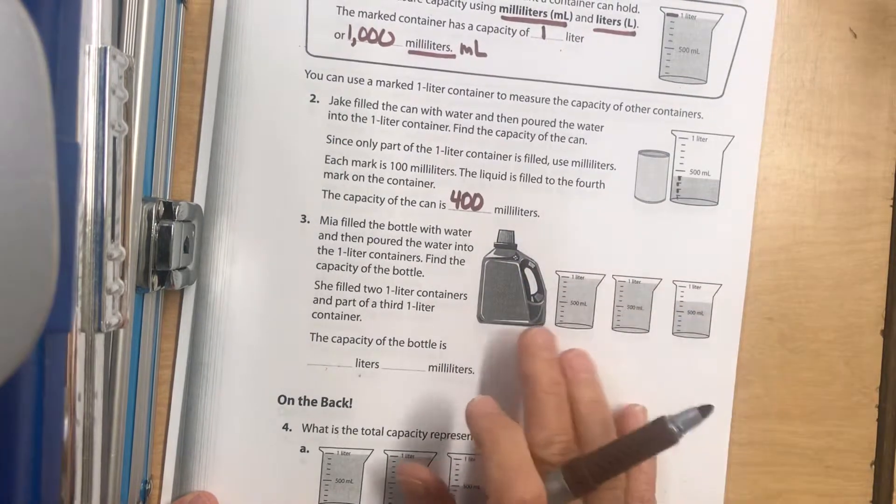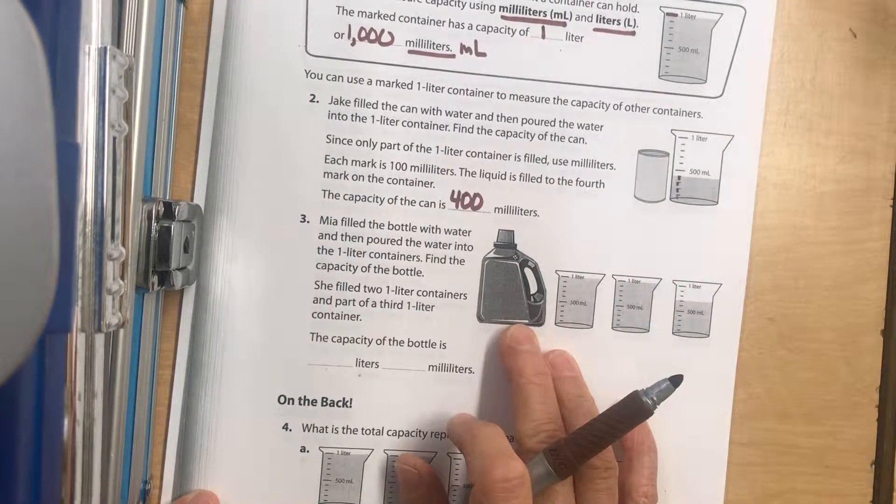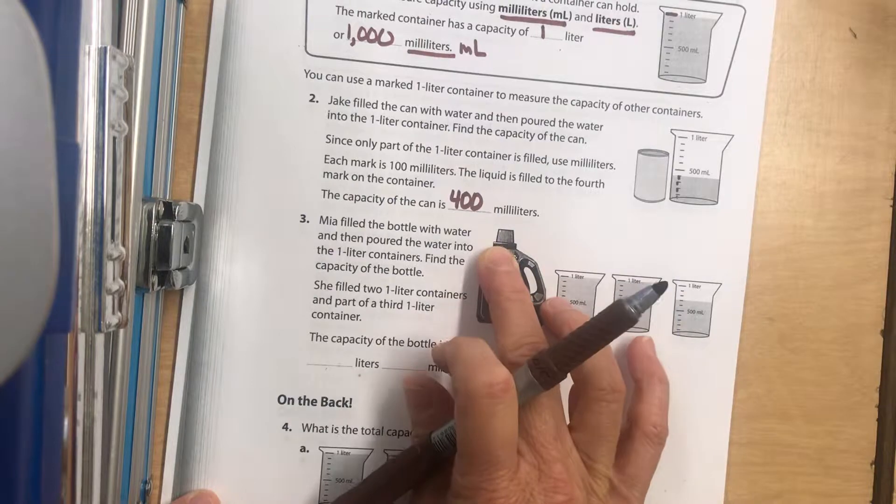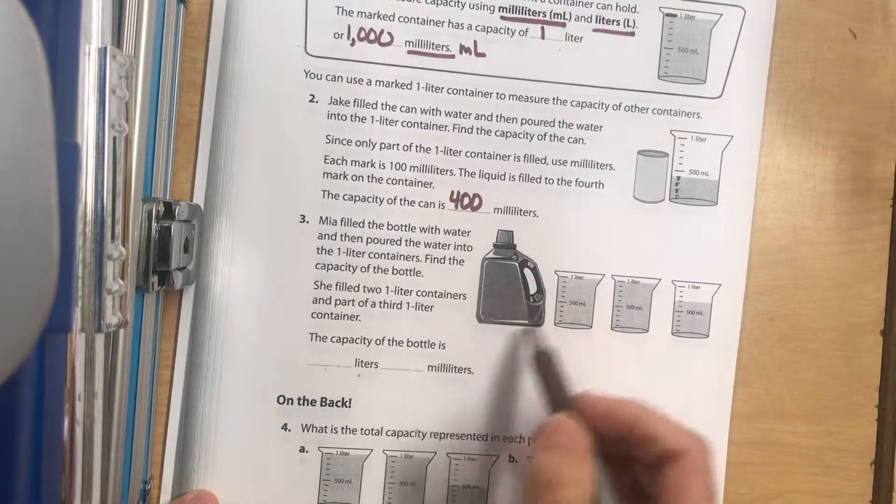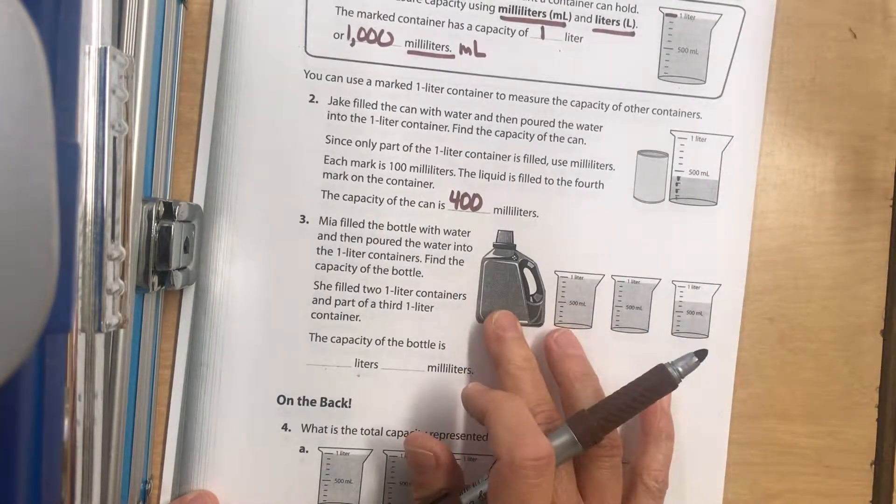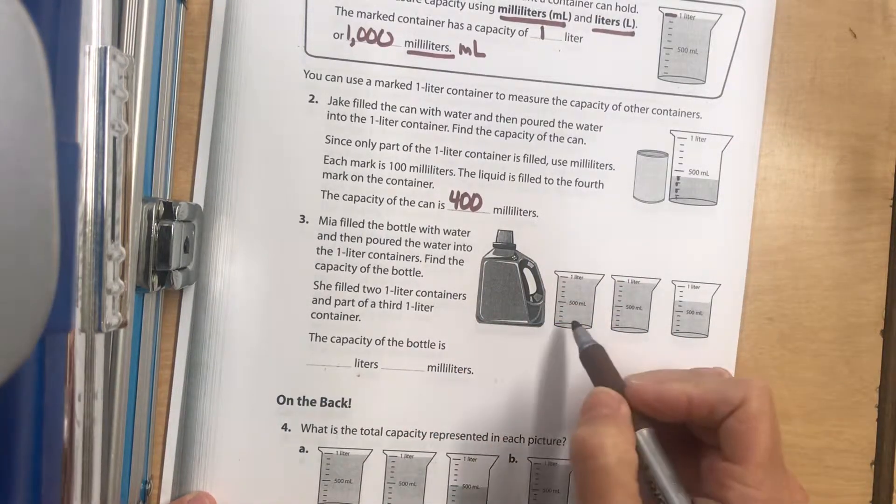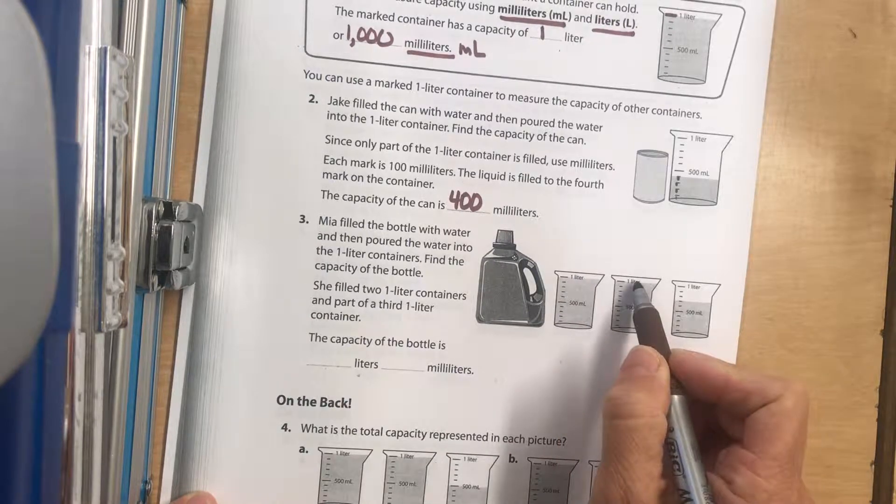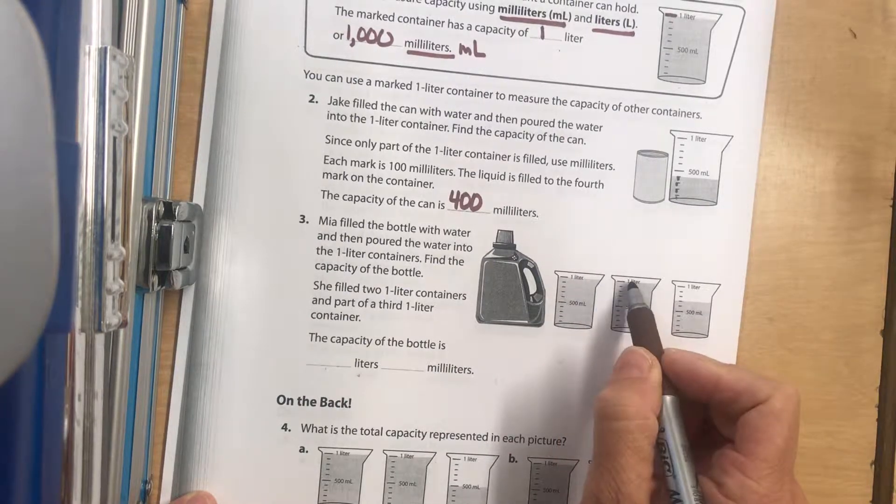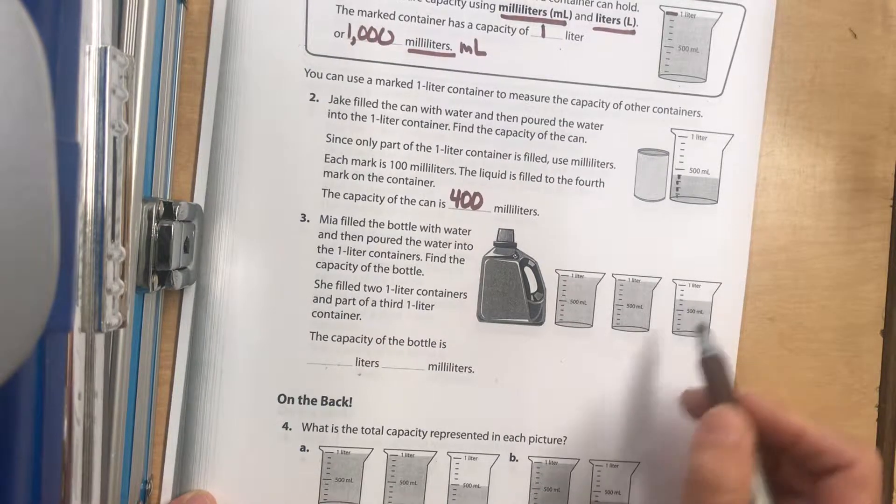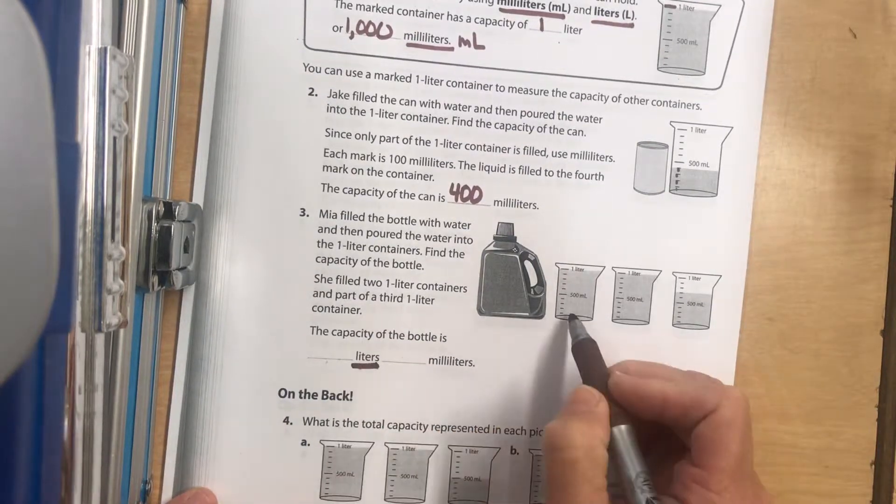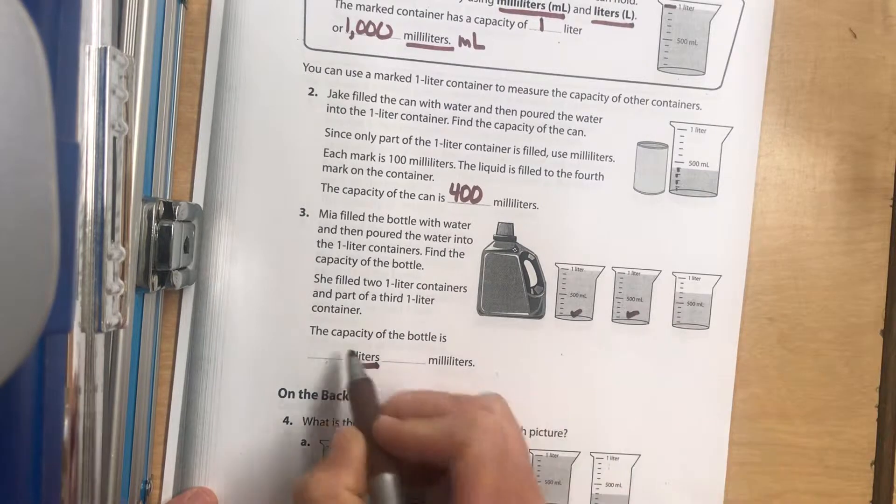Now we have this laundry soap container. She fills it all the way up with water and pours it into different size containers. She wants to know the capacity of this container. She filled up two measuring cups which were one liter each and then partially filled up the third.